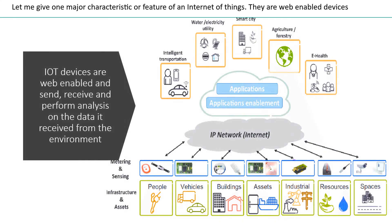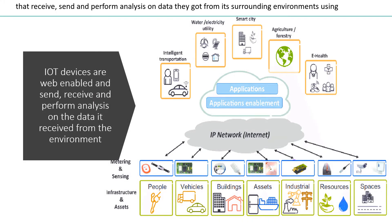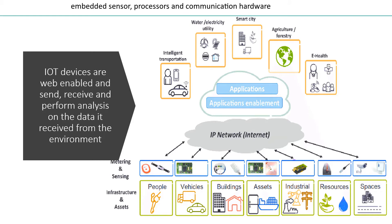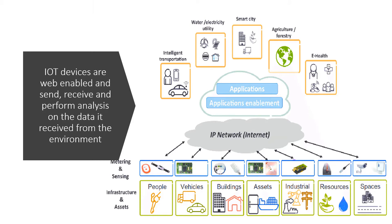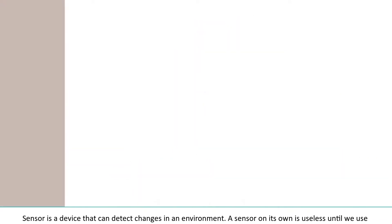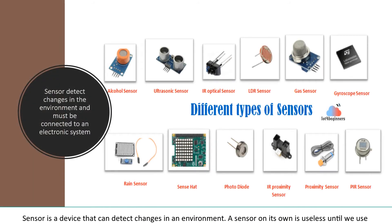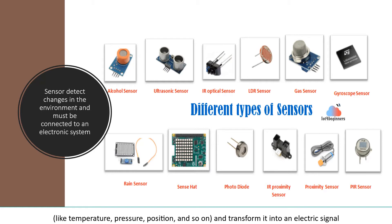One major characteristic or feature of an Internet of Things device is that they are web-enabled devices that receive, send and perform analysis on data they gather from their surrounding environments, using embedded sensors, processors and communication hardware. A sensor is a device that can detect changes in an environment. A sensor on its own is useless until we use it in an electronic system where it performs its function. A sensor can measure a physical phenomenon like temperature, pressure, position, and so on, and transform it into an electric signal.